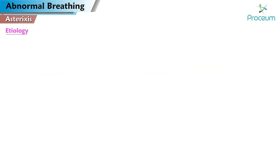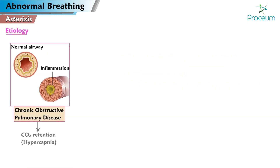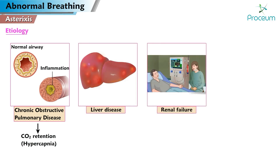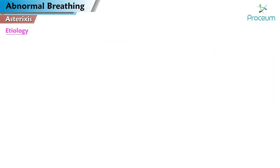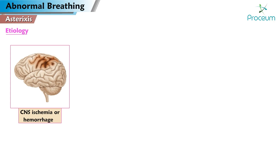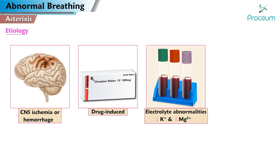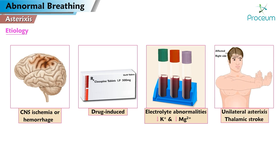Etiology. More common causes are hypercapnia — for example, carbon dioxide retention in chronic obstructive pulmonary disease — liver disease, renal failure, and alcoholism. Less common causes are central nervous system ischemia or hemorrhage, drug-induced (for example, clozapine), electrolyte abnormalities (for example, hypokalemia and hypomagnesemia), and unilateral asterixis due to thalamic stroke.